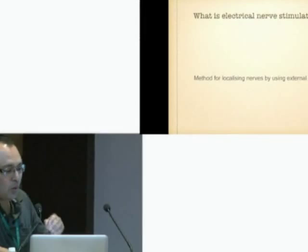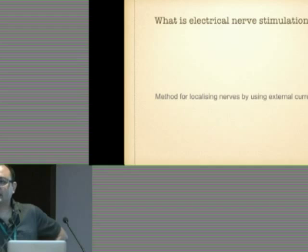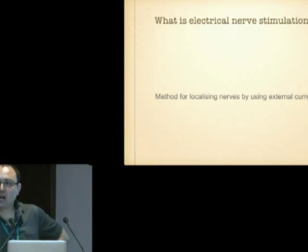Good morning to all of you. I have been assigned to describe the basics of PNS. I declare that I have no conflict of interest because I am going to describe a machine and I have no sponsors and am not propagating any company. Electrical nerve stimulation is nothing but a method for localizing nerves by using external current. We apply the current from outside, stimulate the nerve, locate the nerve, and deposit the local anesthetics.